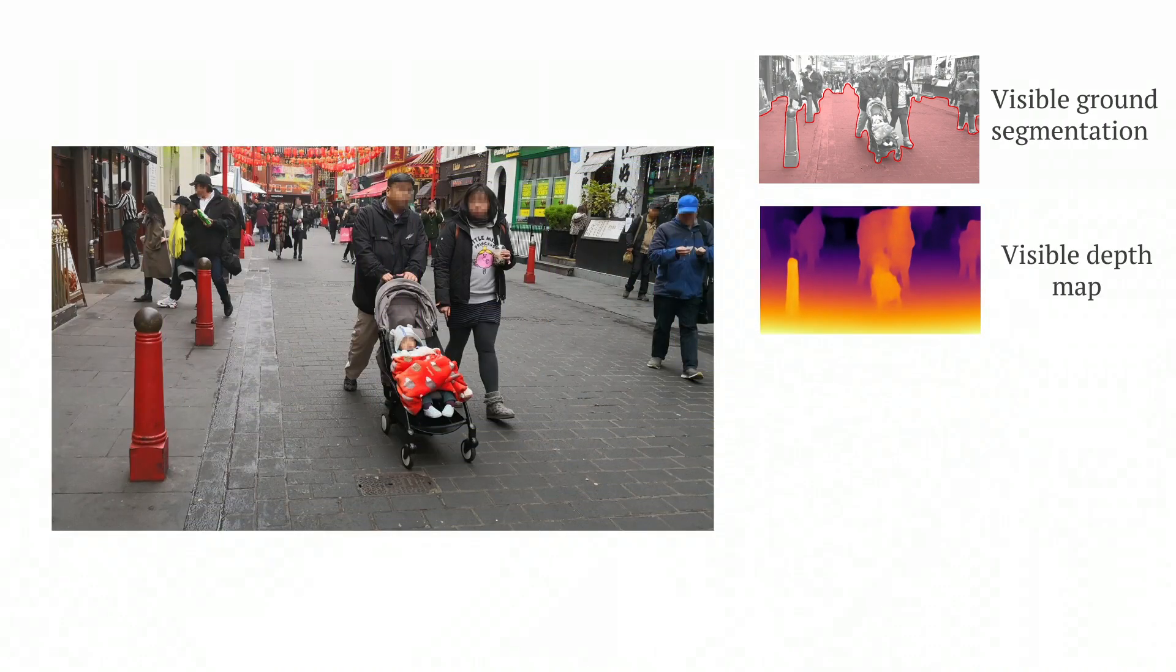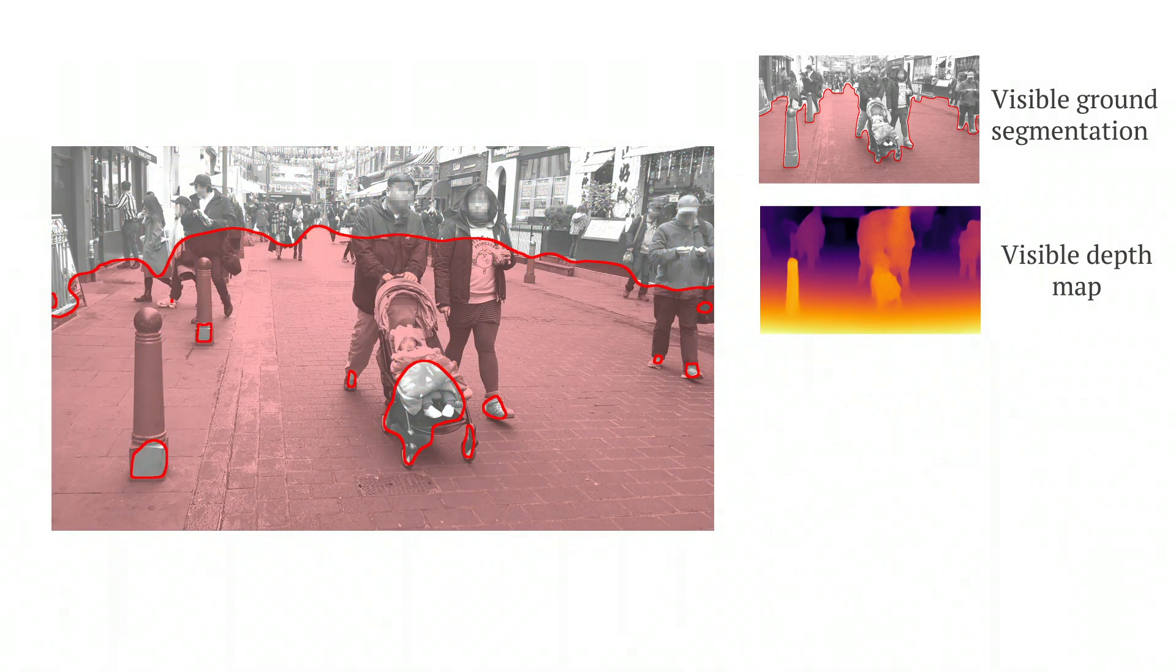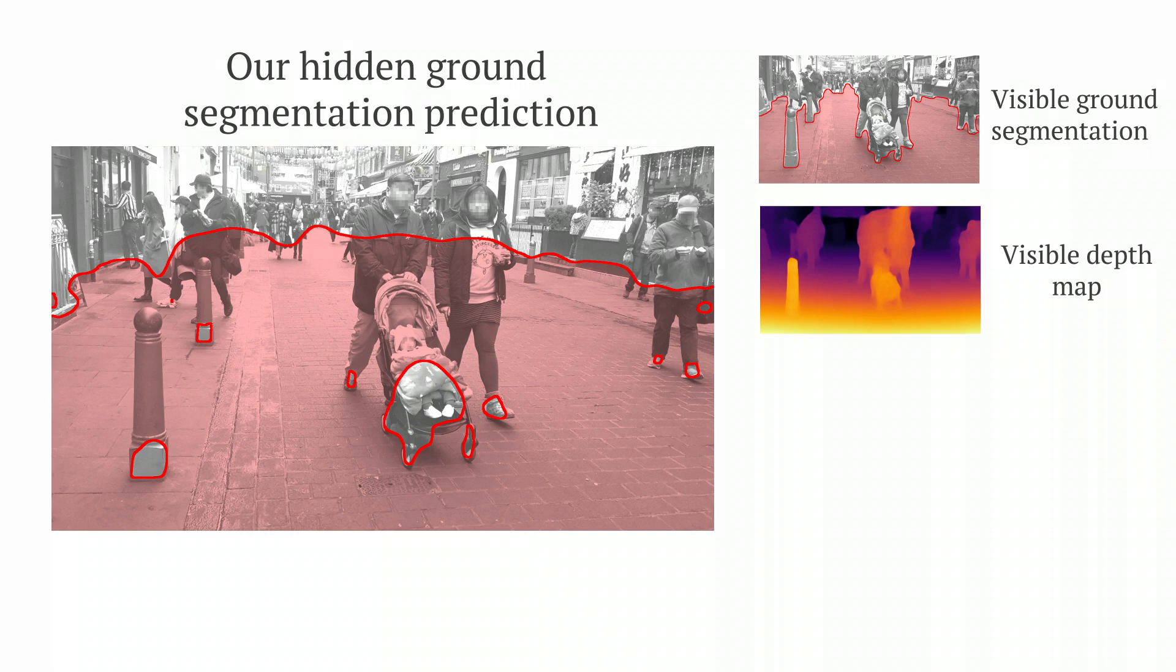Our Footprints model predicts two additional channels, both also pixel aligned to the input image. Firstly, we predict the location of visible and hidden ground as it would be seen from the input camera. This allows us to identify free space in the scene and the untraversable footprints of objects.